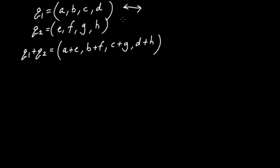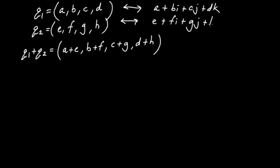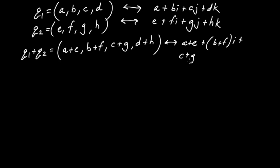We can go back and forth between notations. Thinking of Q1 as A + Bi + Cj + Dk and Q2 as E + Fi + Gj + Hk, their sum is (A+E) + (B+F)i + (C+G)j + (D+H)k — keeping the i's, j's, and k's together respectively. This emphasizes that we can freely switch between the ordered-tuple and the i/j/k notation.